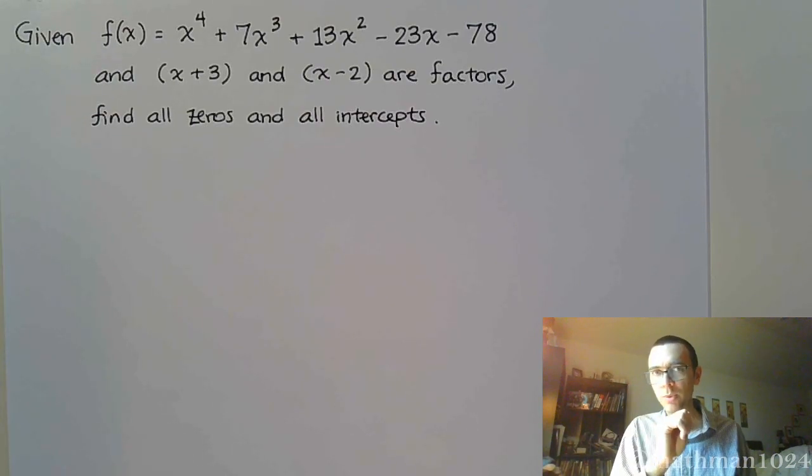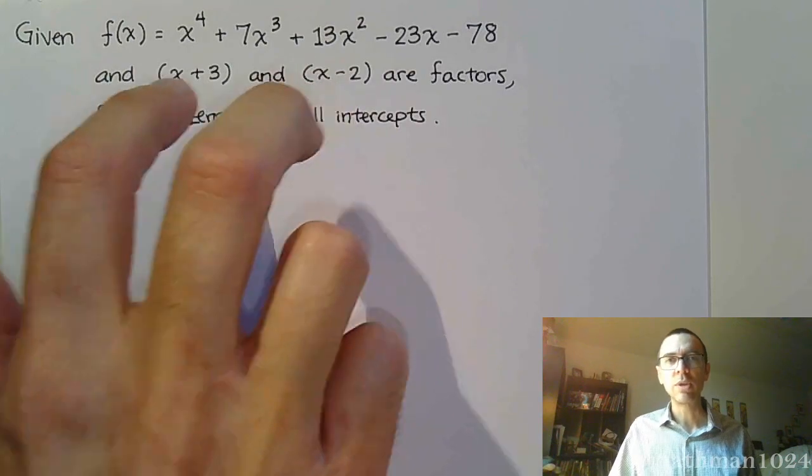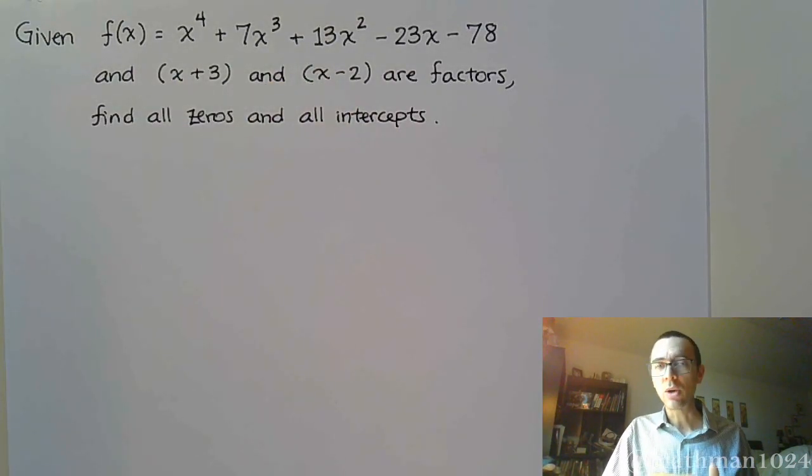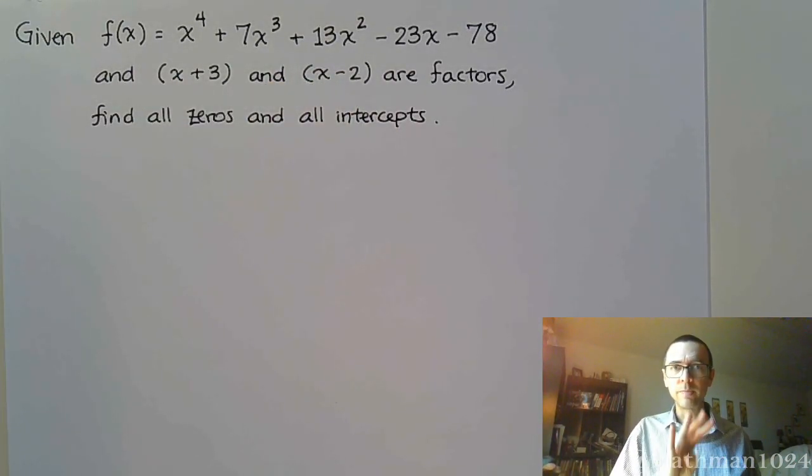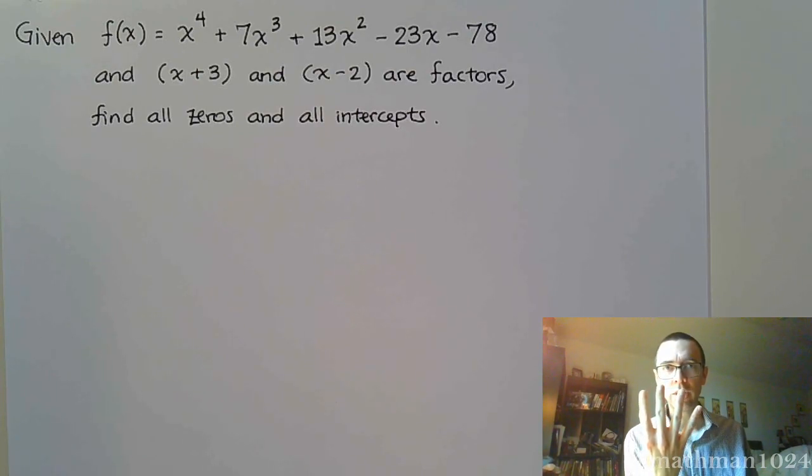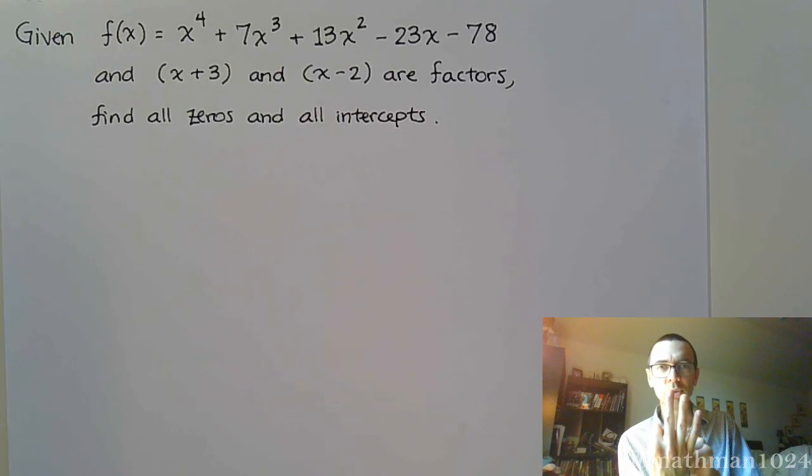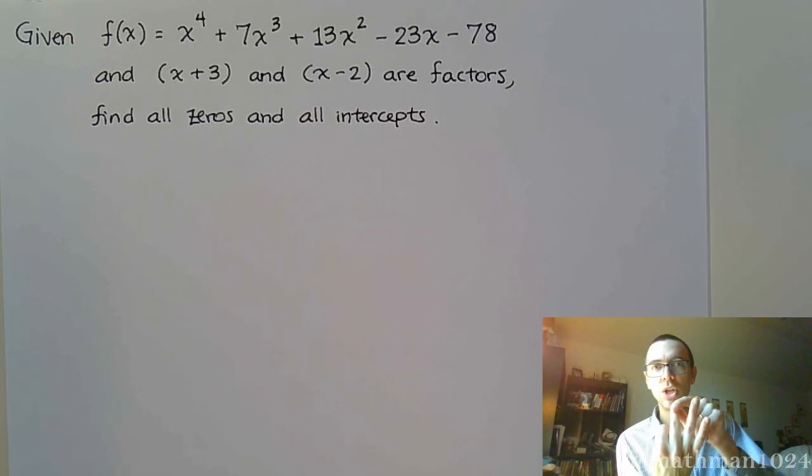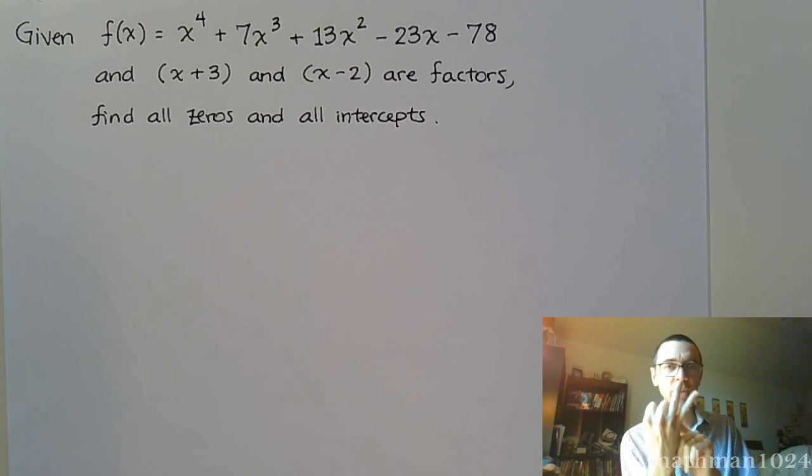But notice what I'm doing here. I'm giving you two factors, and if we divide those guys out one at a time, this is what's going to happen. You have a degree of 4. If you use x plus 3, that now leaves you with something that's degree 3. And if you use the x minus 2, you would then have a degree of 2.